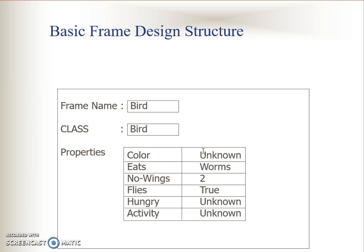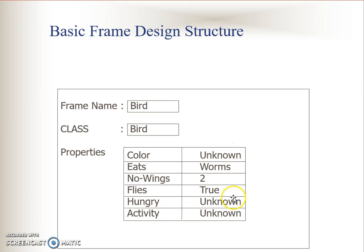The example is bird. This frame is actually a superclass by itself because the frame name is bird and the class name is also bird. It has a few properties: color, eats, number of wings, flies, hungry, and activities. And this is the list of values for each property.